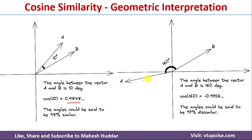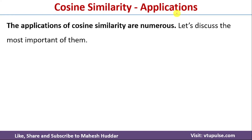If the angle between A and B is more than 90 degrees — say 160 degrees — cos of 160 is equal to minus 0.9756. That means A and B are 97% dissimilar with one another. This is how we can easily understand cosine similarity with geometric interpretation.